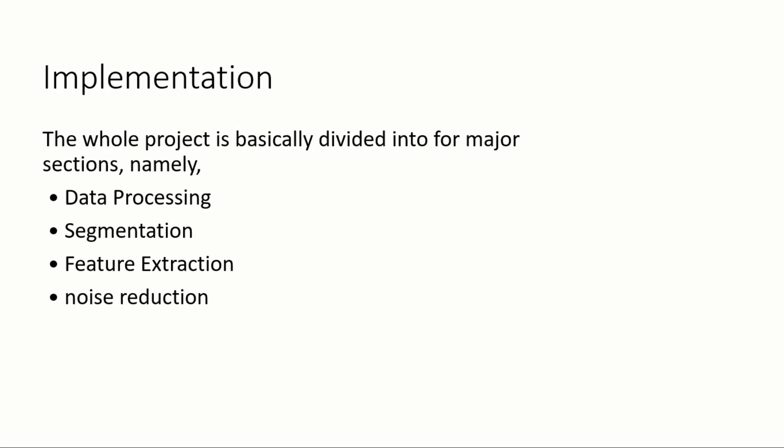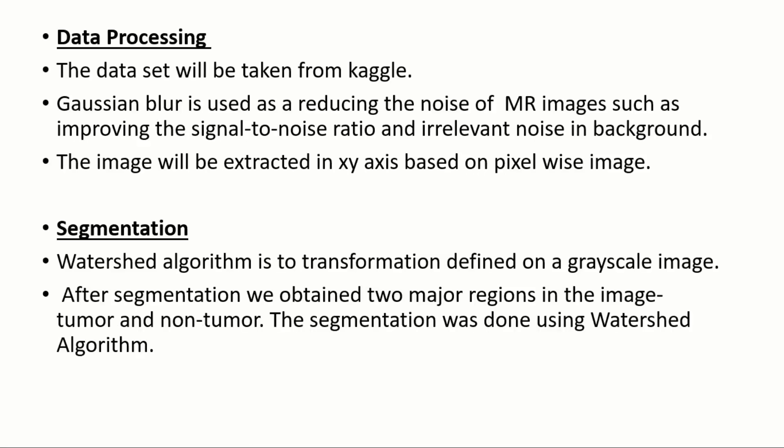In the implementation process, the whole project is divided into four major sections: data processing, segmentation, feature extraction, and noise detection. In data processing, we use MRI scan images as a dataset taken from Kaggle. We use Gaussian Blur as the algorithm. Gaussian Blur plays an important role — it is used to reduce the noise of the MRI scan images, improving the signal-to-noise ratio, reducing irrelevant noise in the background, and improving the quality and clarity of the raw MRI scan images. The image will be extracted in the x-axis based on pixel size.